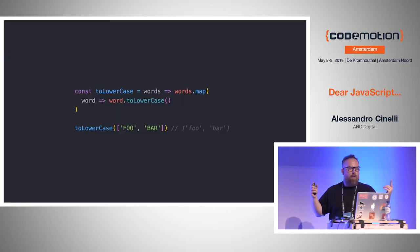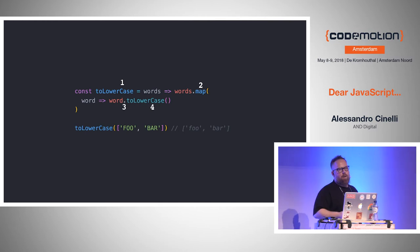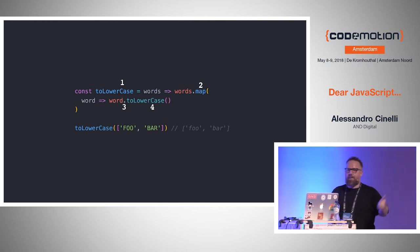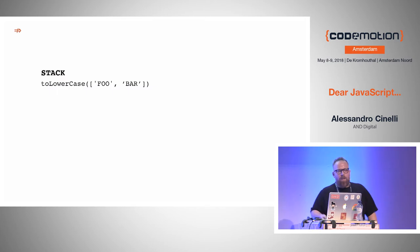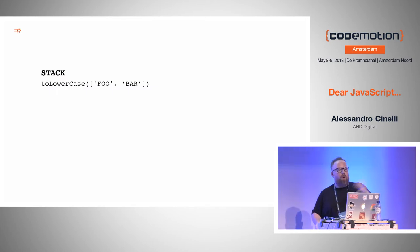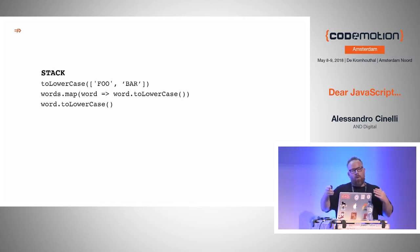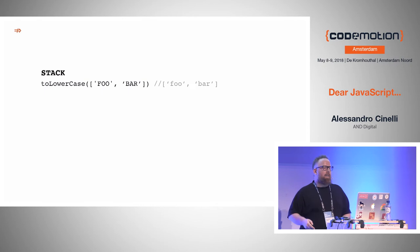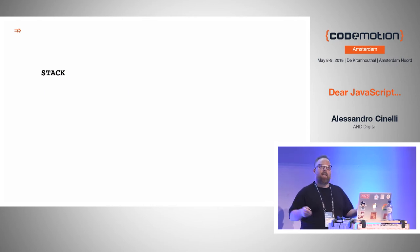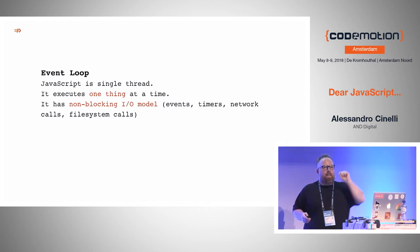Let's go back to the toLowercase example. You have four different function calls: the toLowercase function call, map, and toLowercase called twice because we have two elements in the array. Think about a stack: toLowercase comes in, then map, then we call toLowercase once — it's done, it returns — then again toLowercase, then it returns back, map is done, and the stack gets cleared. Basically JavaScript is executing four things, one thing at a time. This is one of the things that clicked for me.